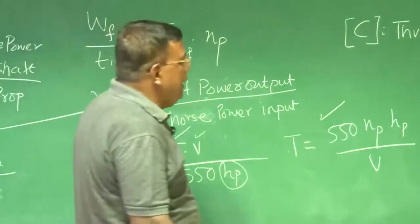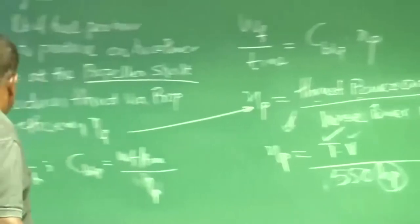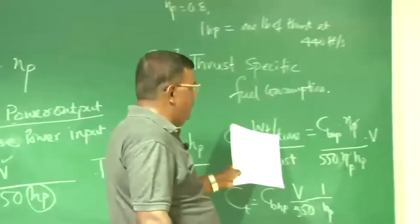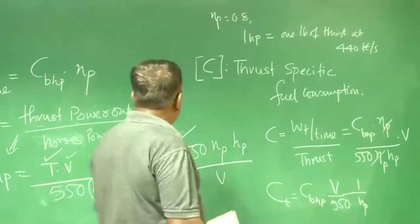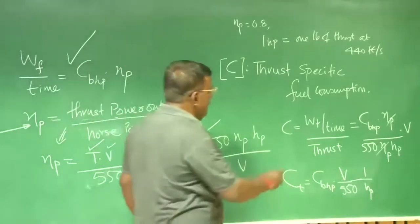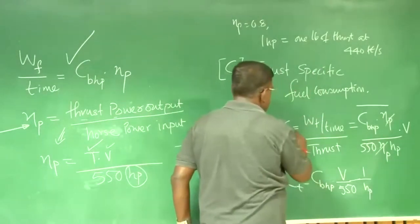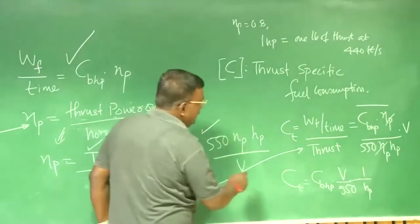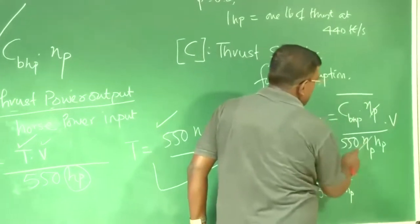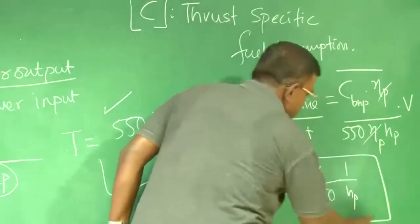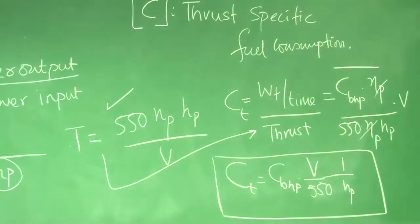Once I know N_p, I can write thrust = 550 × N_p × HP / V. Now, C_T is rate of fuel consumed divided by thrust. Substituting: C_T = C_bHp × HP divided by thrust, and using the thrust expression, N_p cancels out, giving the final relationship: C_T = C_bHp × V / (550 × N_p). This tells you how much thrust is extracted once the engine is rated by power.